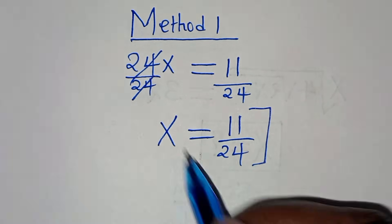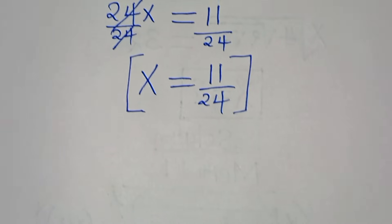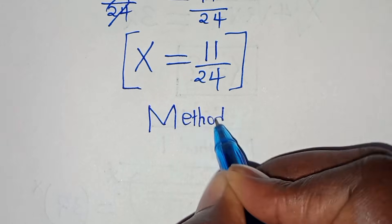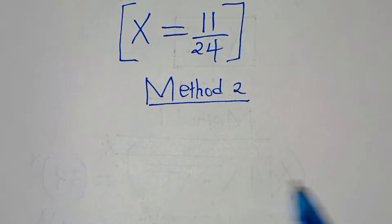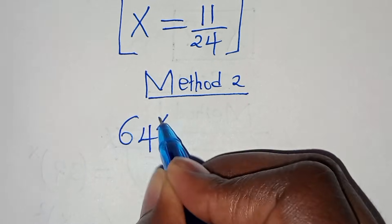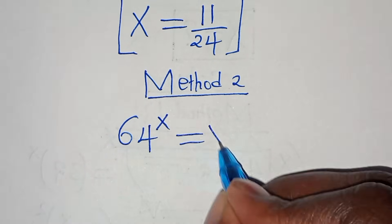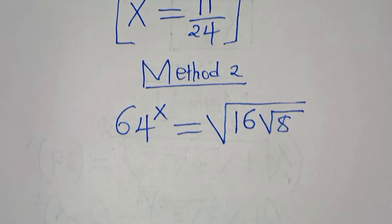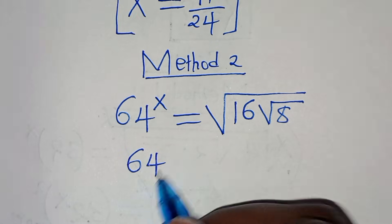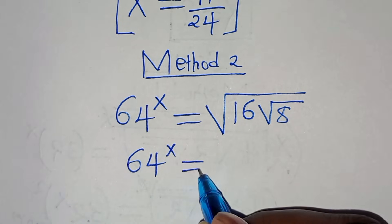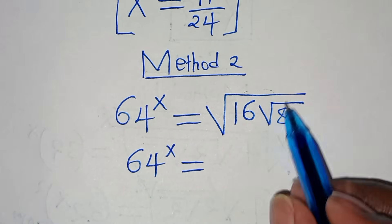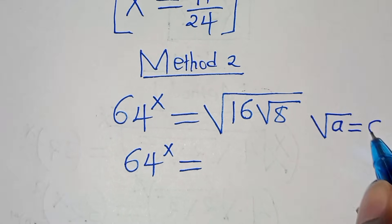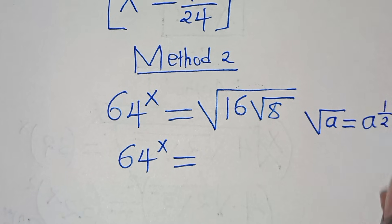That is the value of x by Method 1. Now let's proceed to Method 2. In Method 2, we have 64 raised to the power of x equal to square root of 16 multiplied by square root of 8. Using the identity that square root of a equals a to the power of a half, we convert both square roots to fractional exponents.